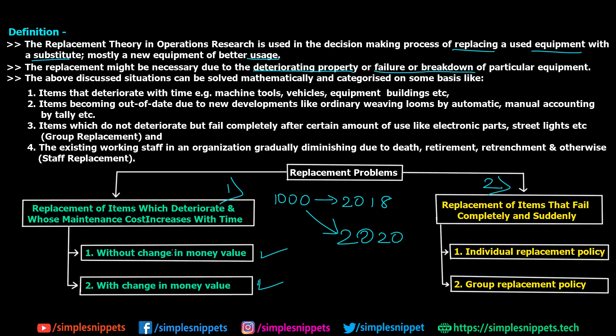We'll be looking at each of these types individually using numerical examples. In the next video, we'll start with type one — replacement of items which deteriorate and whose maintenance cost increases with time — beginning with the sub-case where the value of money doesn't change, then moving on to the other types.